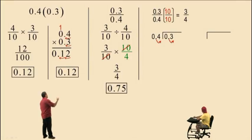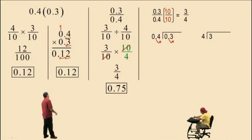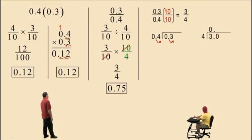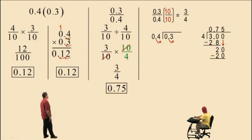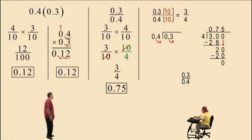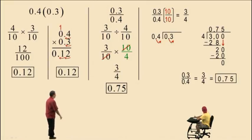So let's do that calculation. Three divided by four means four is going into three. Four does not go into three, so we put a zero as a placeholder. Add another zero — four goes into thirty seven times. Seven times four is twenty-eight. Subtract, we get two. Bring down another zero — four goes into twenty five times. Five times four is twenty, and we get a remainder of zero. So three tenths divided by four tenths is the same as three divided by four, and the answer is seventy-five hundredths. That's what we expected to get.